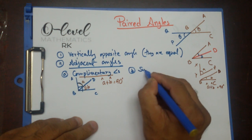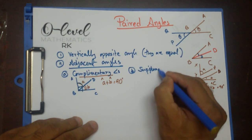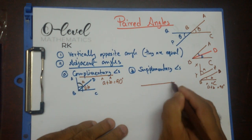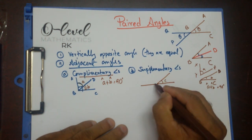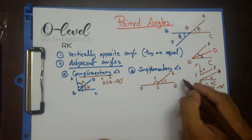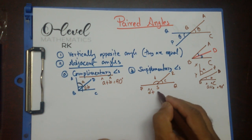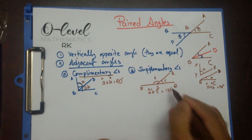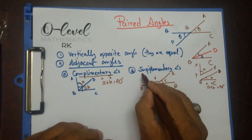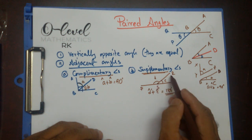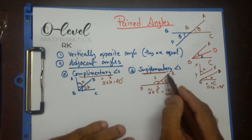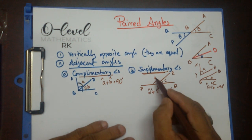The second type is known as supplementary angles. When the sum of two angles equals 180 degrees — let's say angle D plus angle C equals 180 degrees — we call those supplementary angles. Again, they may or may not be adjacent. In this case they are adjacent. We call angle D the supplementary angle of C, and angle C the supplementary angle of D.